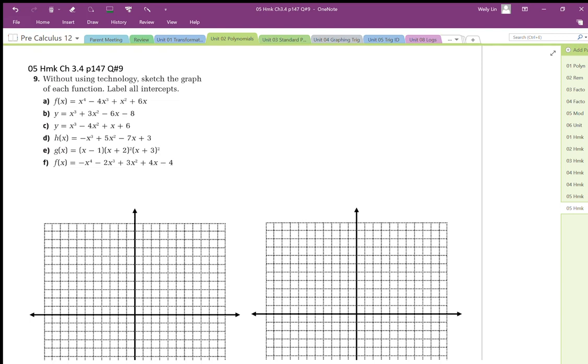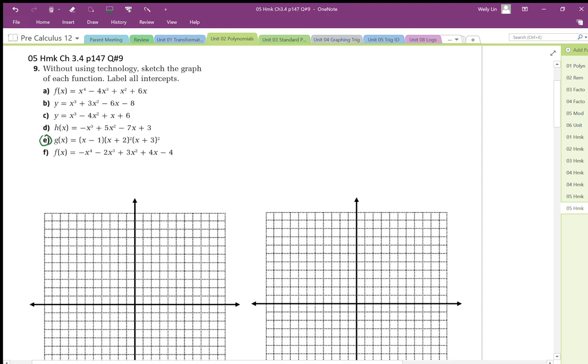Question number 9e asks us to graph without technology. So I'm going to just do this one here, and it's already in factored form. So when we're drawing this without technology, all we really need are, for now anyways, the intercepts, the x-intercepts and the y-intercepts.